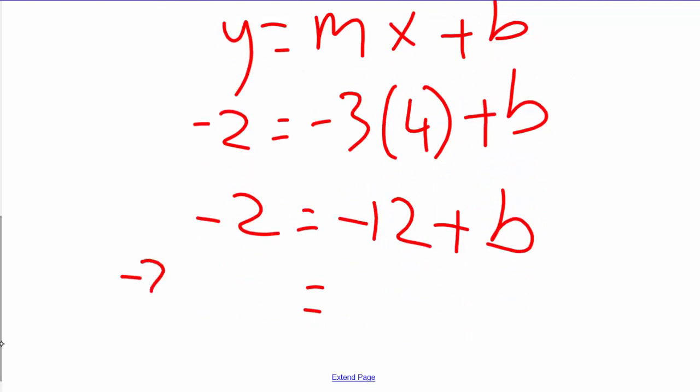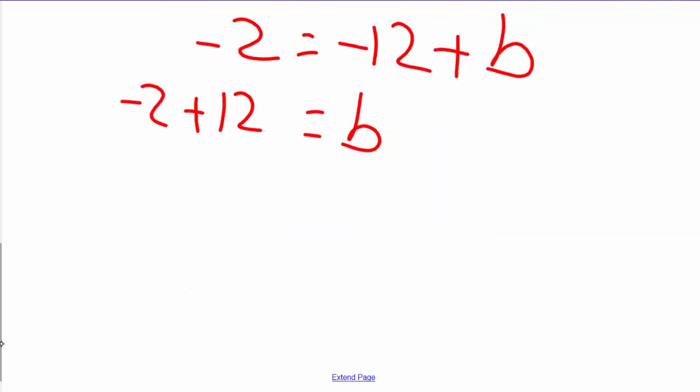-3 times 4 is -12. So -2 = -12 + b, which means -2 + 12 = b, and b is 10. Now we've found the y-intercept and slope.